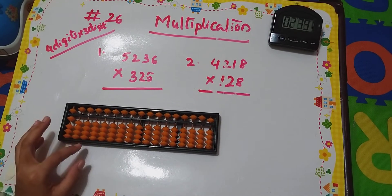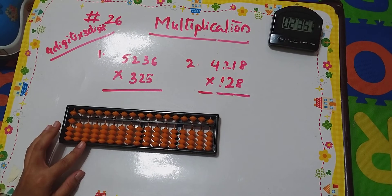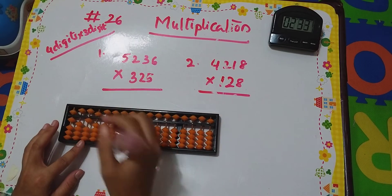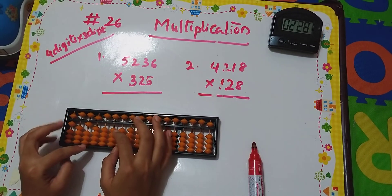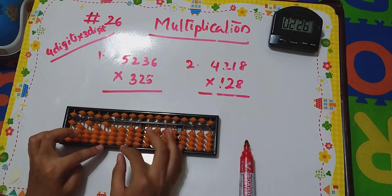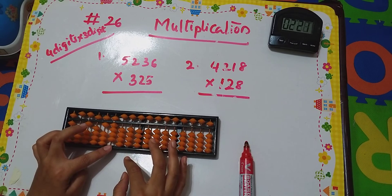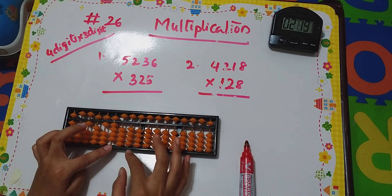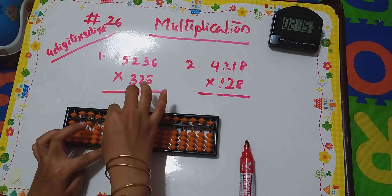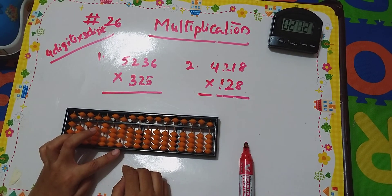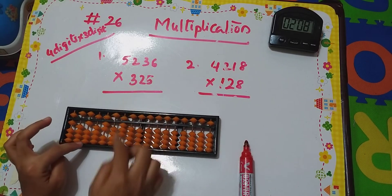5 threes are 15 — 1, 5 done. Then 3 twos are 06 — done. Next, 3 threes are 09 — done. Next, 3 sixes are 18 — 1, 8 — how to add 1 here? Done — 18. Done with 3.